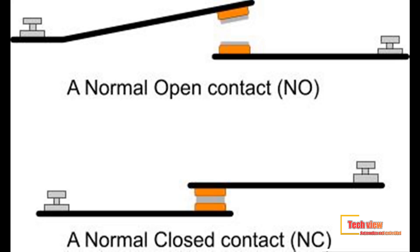Flow switches commonly send data to DCS like a switch contact. There are two types: normally open and normally closed. Using this contact type, we can identify low flow and high flow switch conditions.